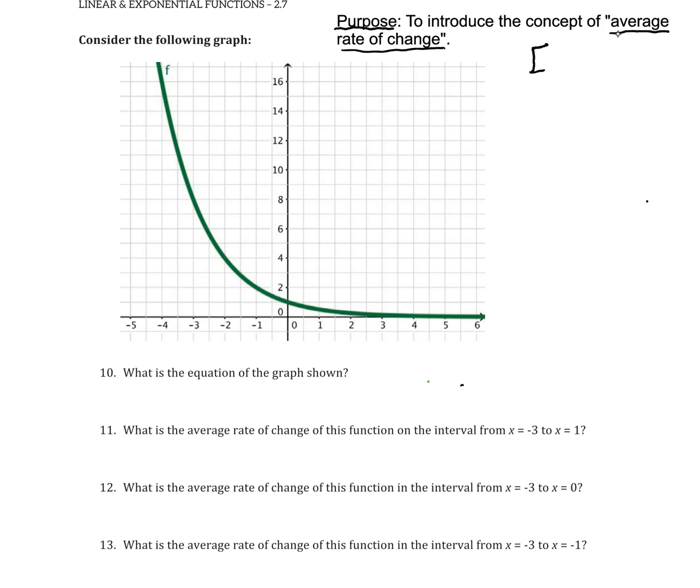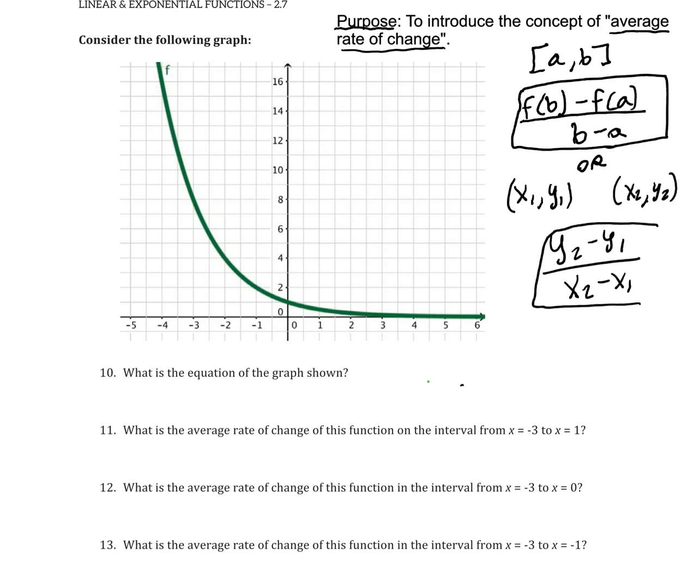That formula for average rate of change is: if I have an interval from a to b and I want to know the average rate of change over that interval, then I have to find the change in y, which is f(b) minus f(a) divided by the change in x, which is b minus a. Another way you can think of it is if I have two points (x₁, y₁) and (x₂, y₂), then this formula can be simplified to be (y₂ - y₁) divided by (x₂ - x₁). Either of these are ways of determining the average rate of change, or the AROC as some people like to call it if you want to be cool in math world.